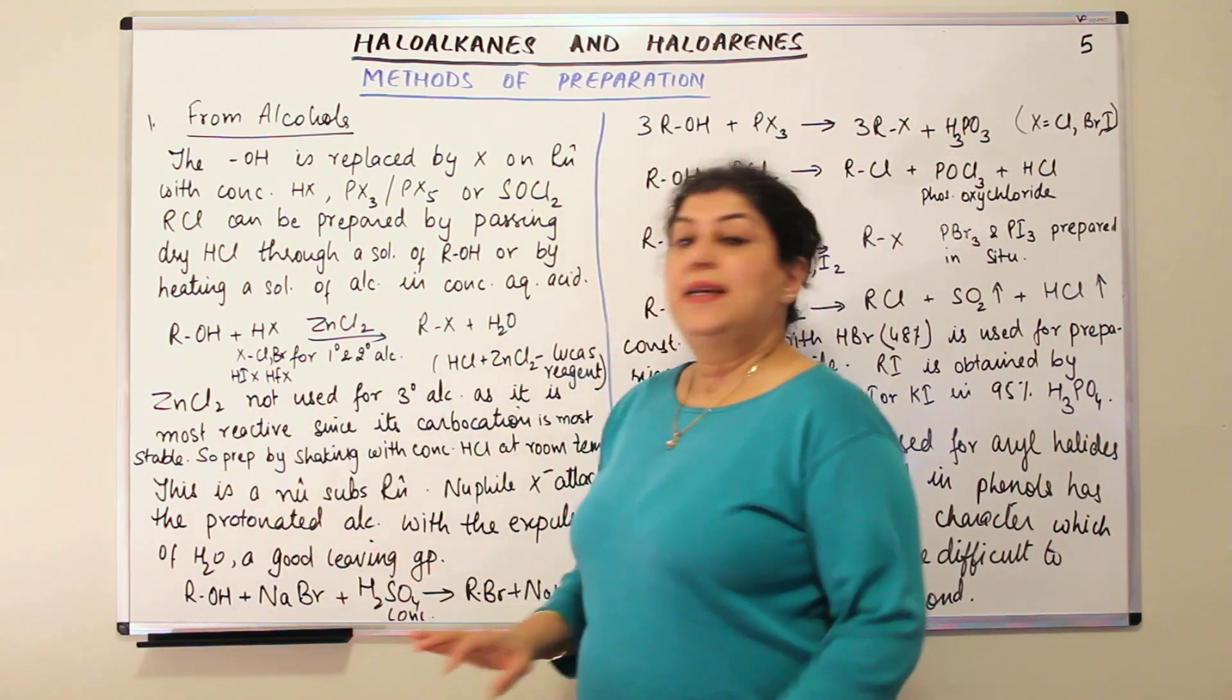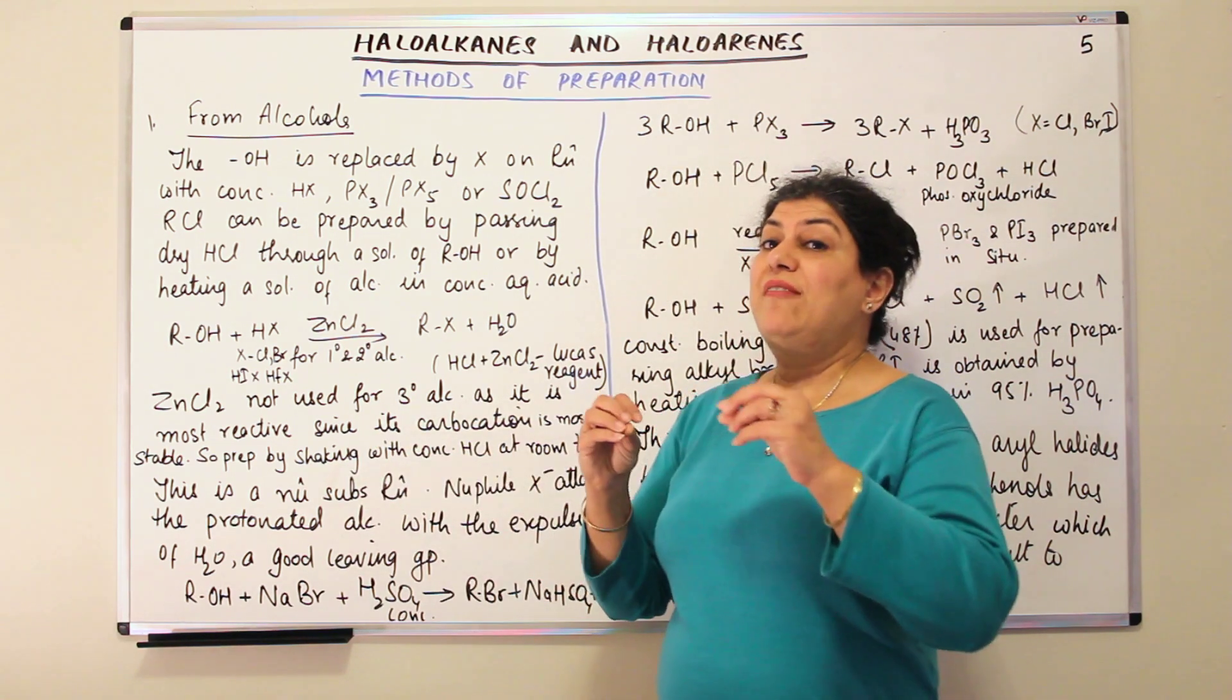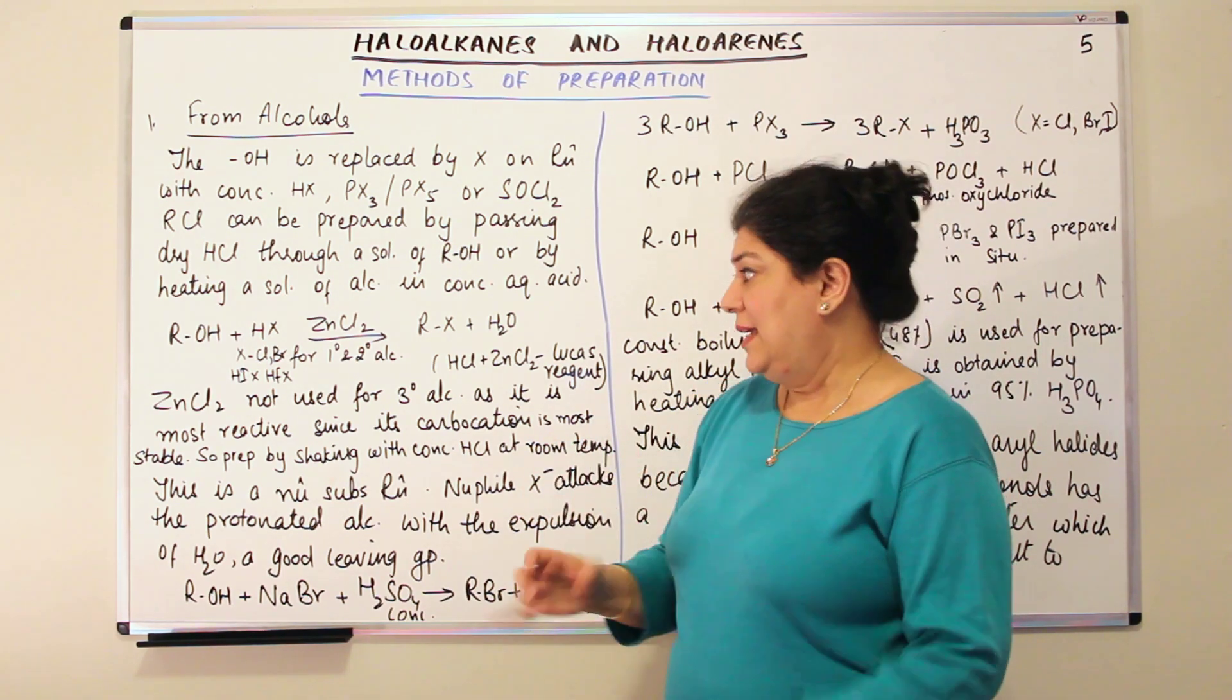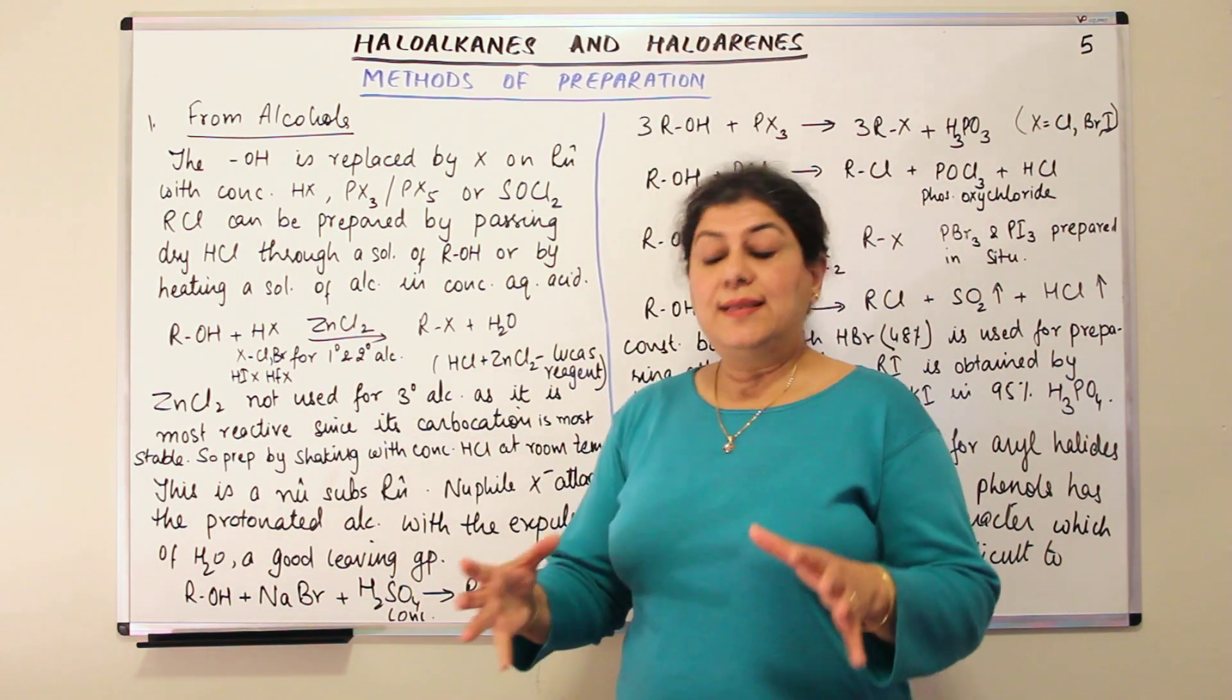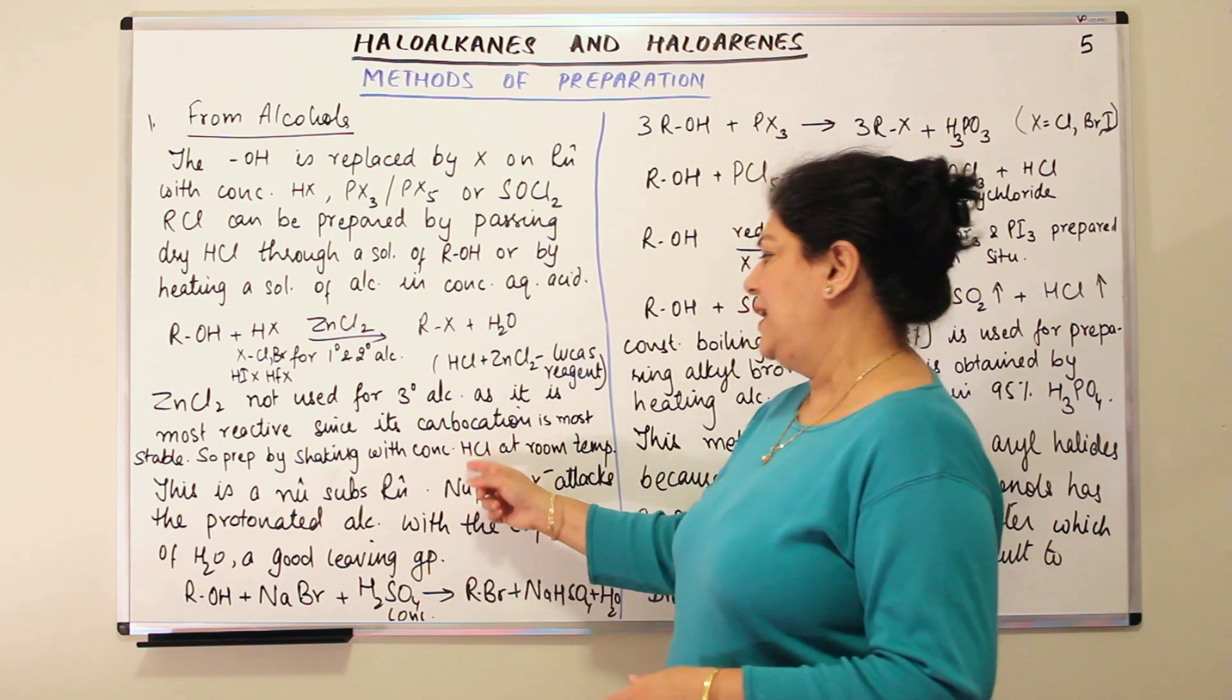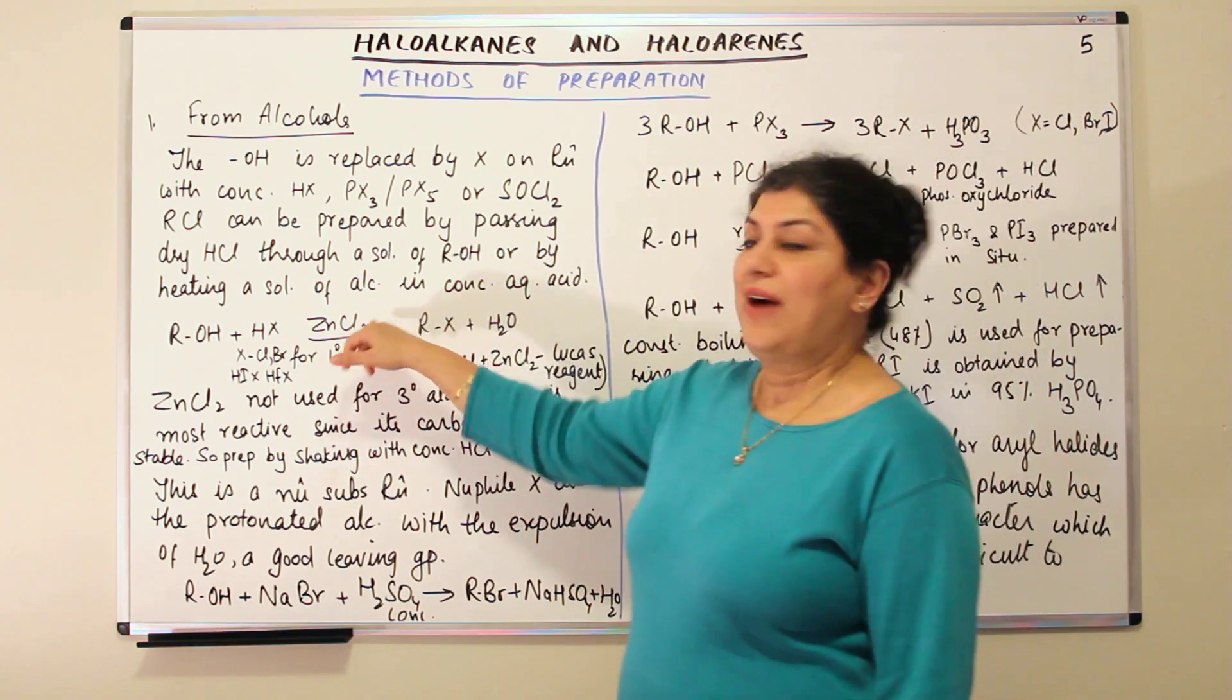Now zinc chloride is not used for tertiary alcohols as they are the most reactive. Tertiary alcohols themselves are most reactive. And it is the most reactive since when you have a nucleophilic substitution reaction, first the alcohol gets protonated and the protonated alcohol forms a carbocation. So the carbocation that is formed is the most stable in the case of a tertiary alcohol. And since the carbocation is the most stable there is no need of using zinc chloride in that case. So since its carbocation is most stable, its preparation is simply done by shaking concentrated HCl with the tertiary alcohol at room temperature. Put it in a flask, shake them together and you will get the product. And there is no need of adding zinc chloride to it.